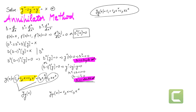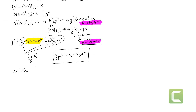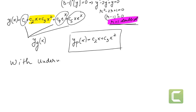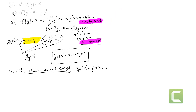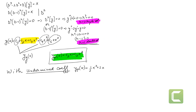The annihilator method helps us find the form of the particular solution without fully calculating the undetermined coefficients. Using undetermined coefficients we previously found the particular solution is one-half x squared plus 2x. The annihilator method gives us the form y_p equals c2 x plus c3 x squared, but not the constants themselves. Our goal now is to find c2 and c3.